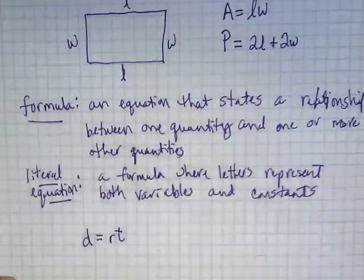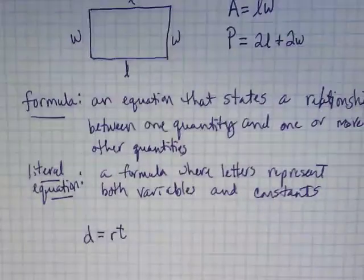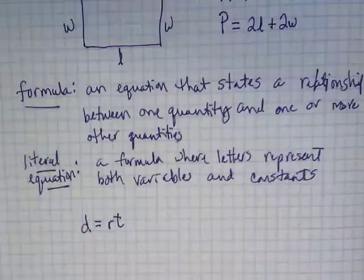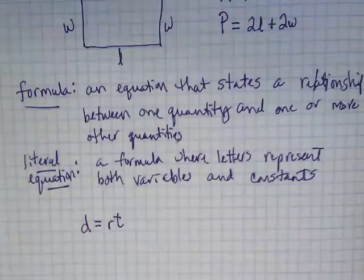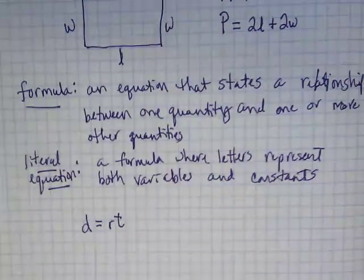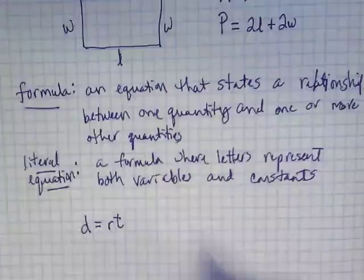Distance equals rate times time. This is a formula. We know that if you multiply rate times time, you get the distance people travel, or a car or an airplane or a train.